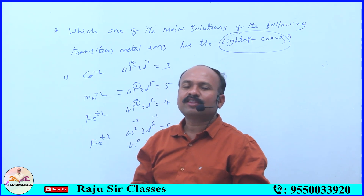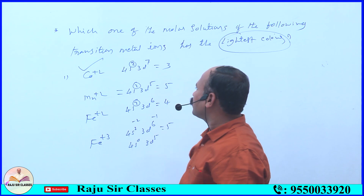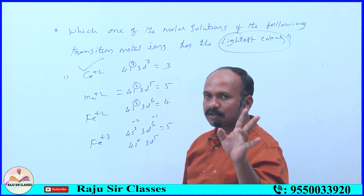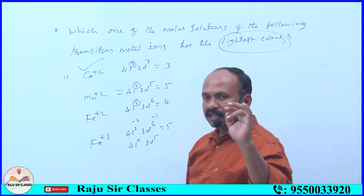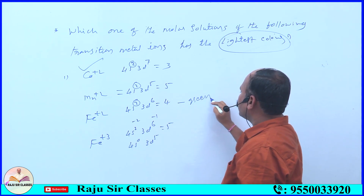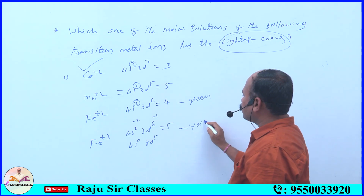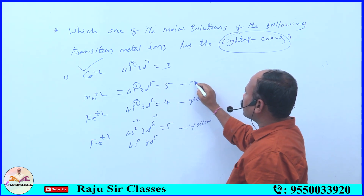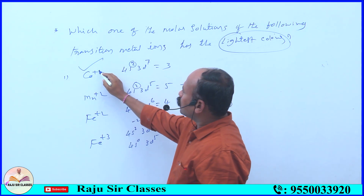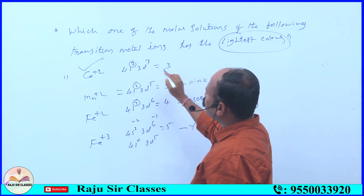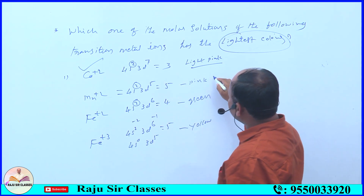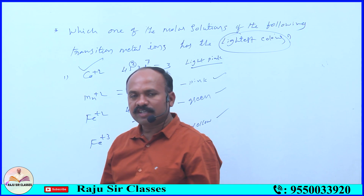Fewer unpaired electrons means less color (lightest color). Fe²⁺ is green, Fe³⁺ is yellow, Co²⁺ is light pink. The ion with the lowest unpaired electrons gives the lightest color. Mn²⁺ (3d5 but with specific pairing) gives the lightest, nearly colorless solution.